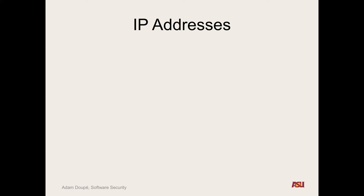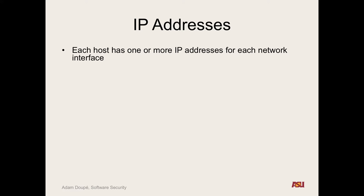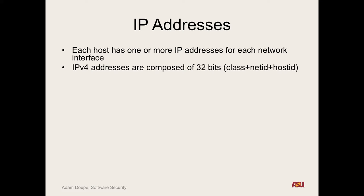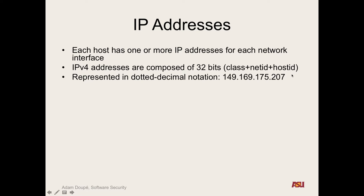We're going to start with IP addresses because they're key to network security. Each host on the network needs an address so you can refer to it. IPv4 is what we'll focus on, since IPv6 adoption isn't quite there yet. IPv4 uses 32-bit addresses. Classically it's divided into a class, a net ID, and a host ID, represented in the familiar dotted decimal notation — each octet is 0 to 255, so four bytes total.